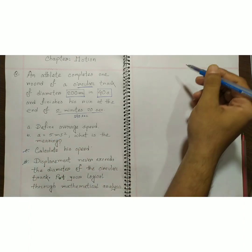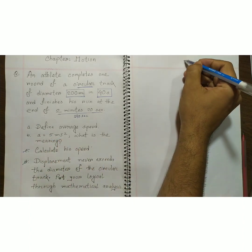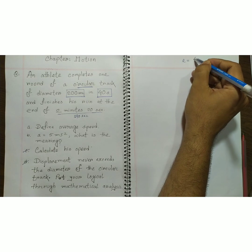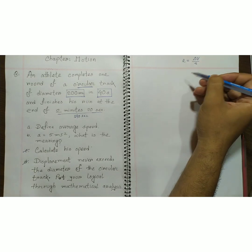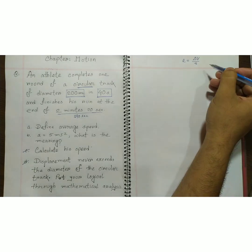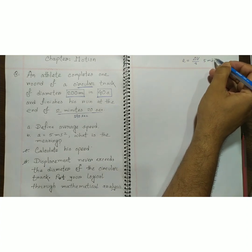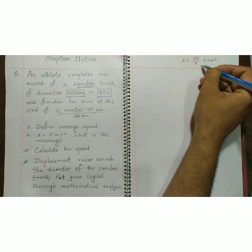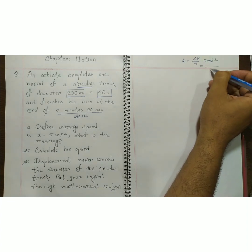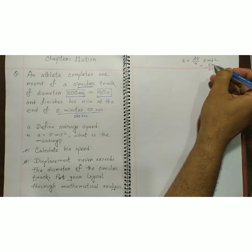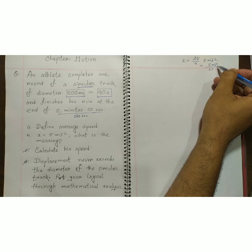Acceleration A is a change of velocity over time. So 5 meter per second squared means that every second, the velocity is changing by 5 meter per second.